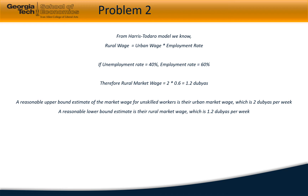Using that, we get the rural market wage to be 1.2 dubias. A reasonable upper bound estimate for the market wage for unskilled workers is their urban market wage, which is 2 dubias per week, while a reasonable lower bound estimate is their rural market wage, which is 1.2 dubias per week.